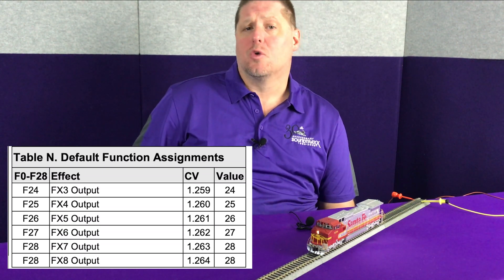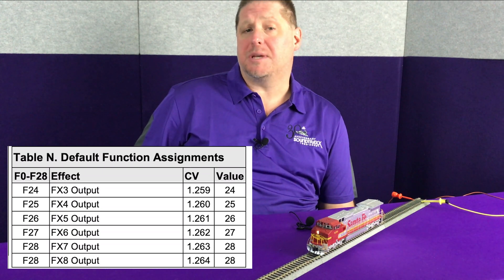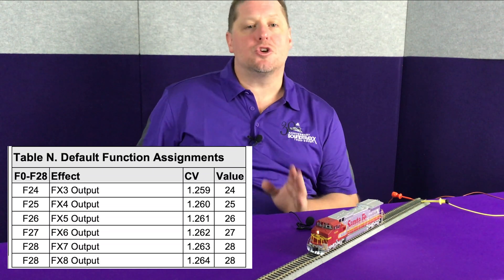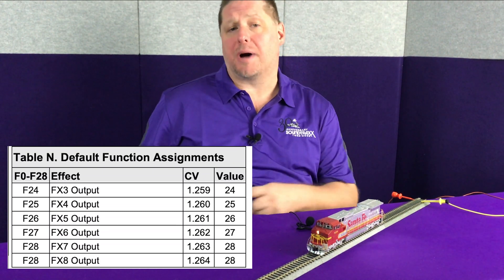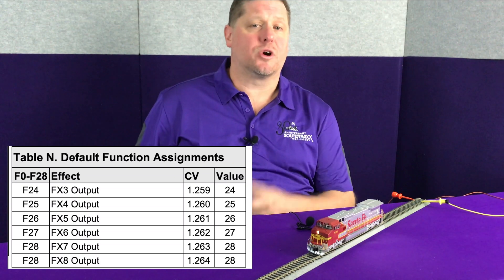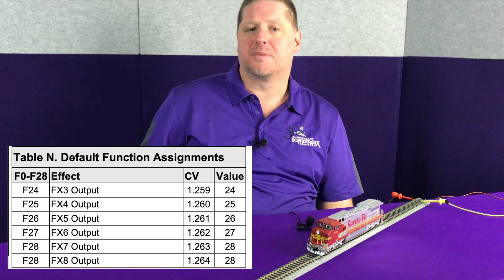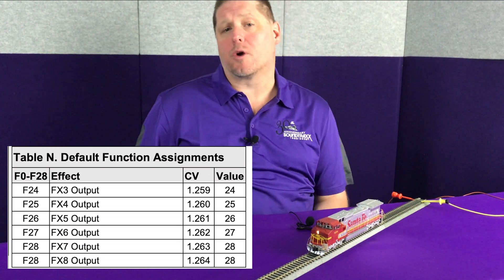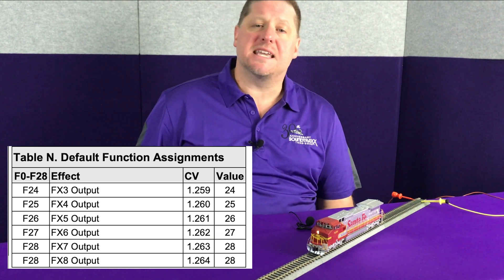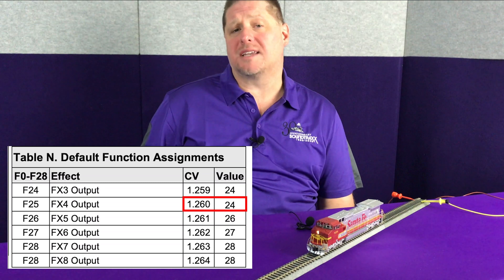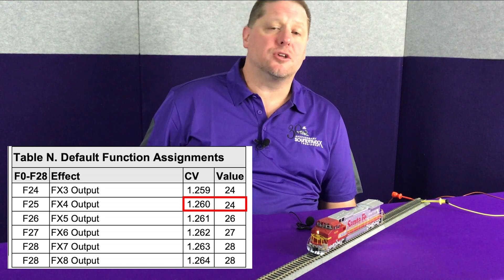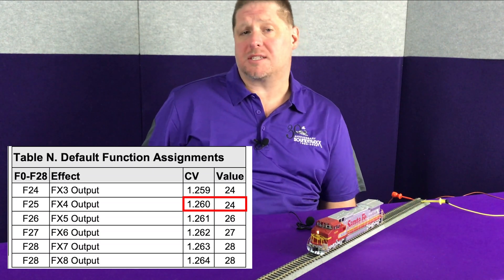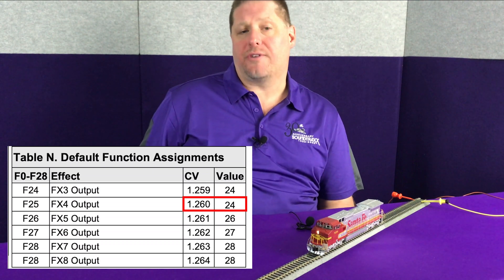FX4, which is controlled by button 25, does need to be changed so that it's also controlled with button 24. When you're doing your function mapping, you can have more than one effect triggered by a single button — in this case, two lighting outputs controlled with a single button. The caveat is you cannot control a single lighting or sound effect with more than one button. The FX4 lighting effect is controlled by CV 1.260, and the value of the CV corresponds to the button that controls it, so we're going to set CV 1.260 to a value of 24.